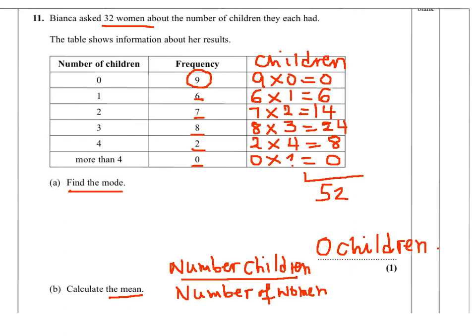The mean is the average number of children per woman. So we have 52 divided by the total number of women which is 32, and if you divide this we get 1.63 children per woman.